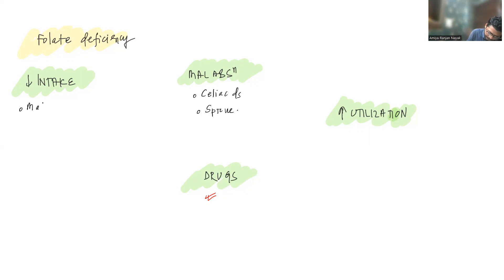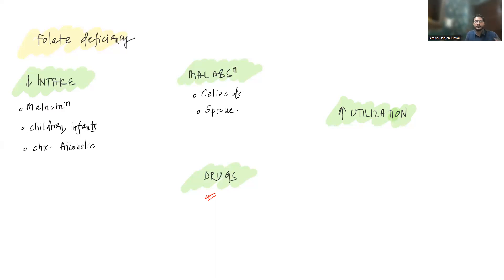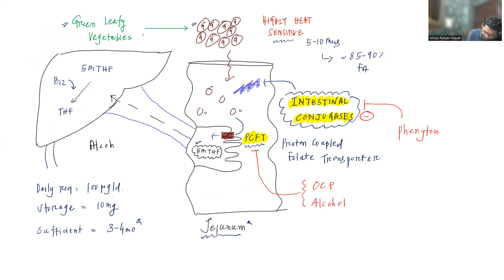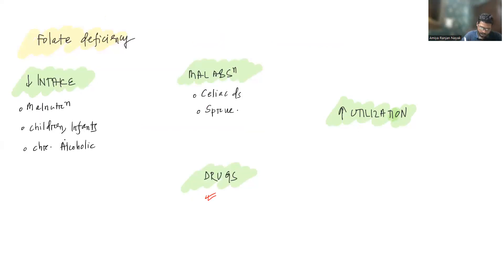Decreased intake occurs in malnourished patients with poor diet, in children and infants, and in chronic alcoholics. Chronic alcoholics have poor diet leading to reduced intake, defective absorption, and alcohol also inhibits the release of folic acid from the liver. So folic acid deficiency is very common in chronic alcoholics. If a child is predominantly dependent on goat milk, they can also develop folic acid deficiency because goat milk is a very poor source of folic acid.